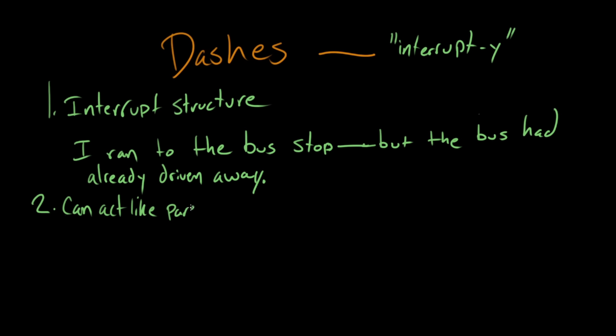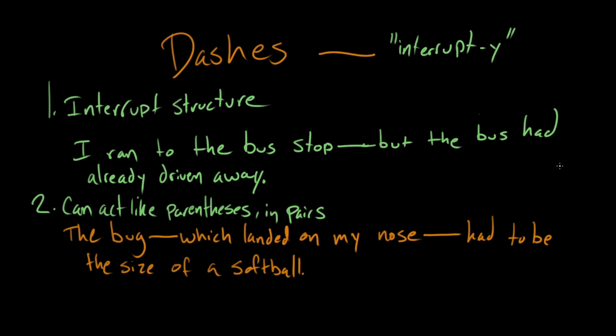Use number two for the dash is that they can act like parentheses in pairs. So the dash is in the same place as another type of punctuation could be again? Correct. Okay. The dash is kind of like—so let's look at another example sentence and I'll switch colors. The bug—which landed on my nose—had to be the size of a softball. Enormous bug. But Paige, as you rightly pointed out, this is the same as having it in parentheses. You wouldn't have both of these together like that. But they do the same thing. They have the exact same function in this case.